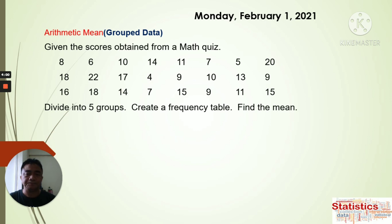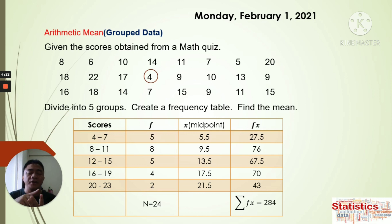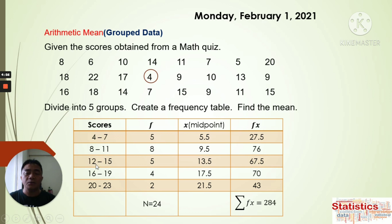Now we create the frequency table. The minimum value is 4 and the class interval is 4. So the classes are: 4 to 7, 8 to 11, 12 to 15, 16 to 19, and 20 to 23. Each interval has a width of 4, and there are 5 groups or classes.